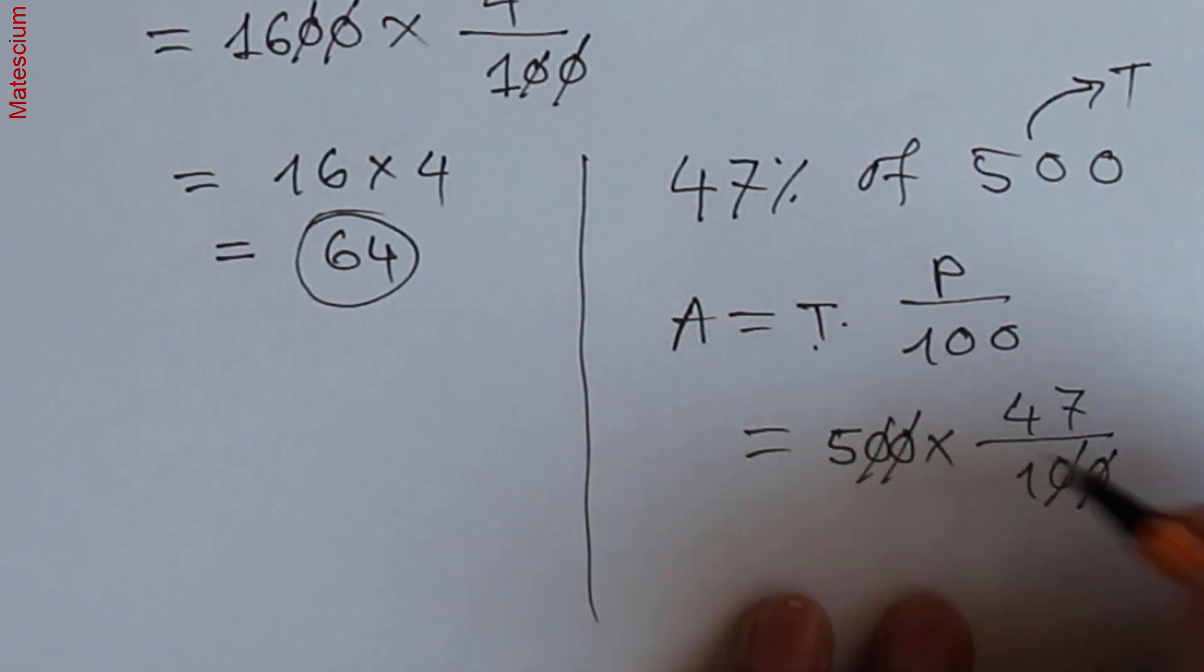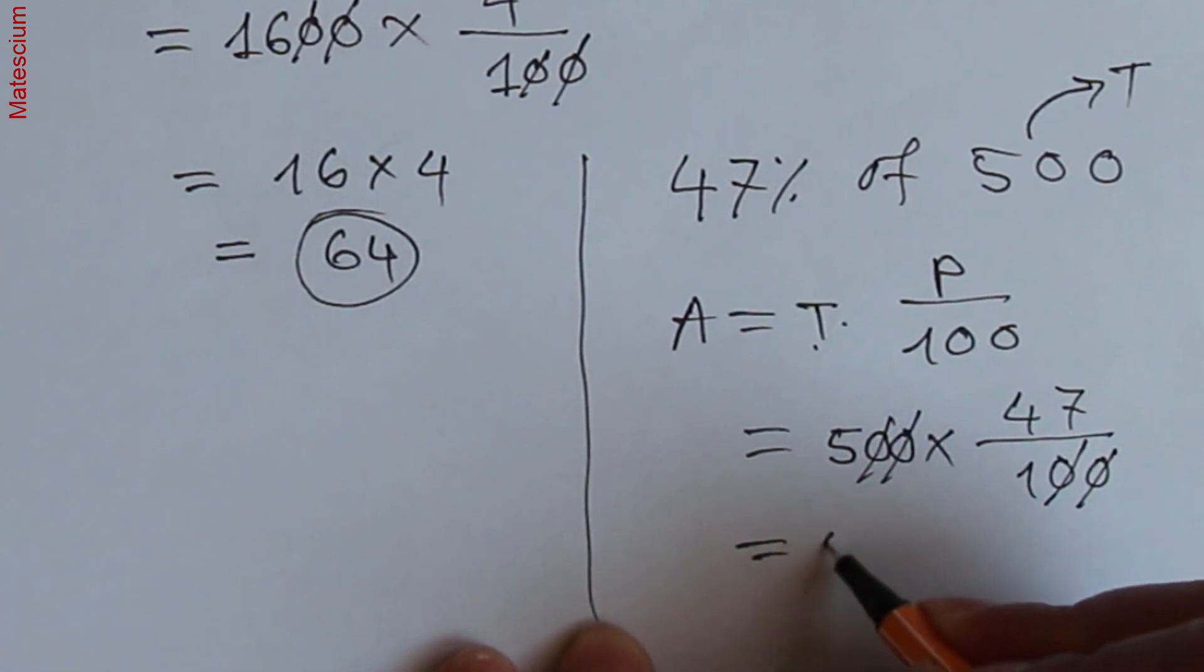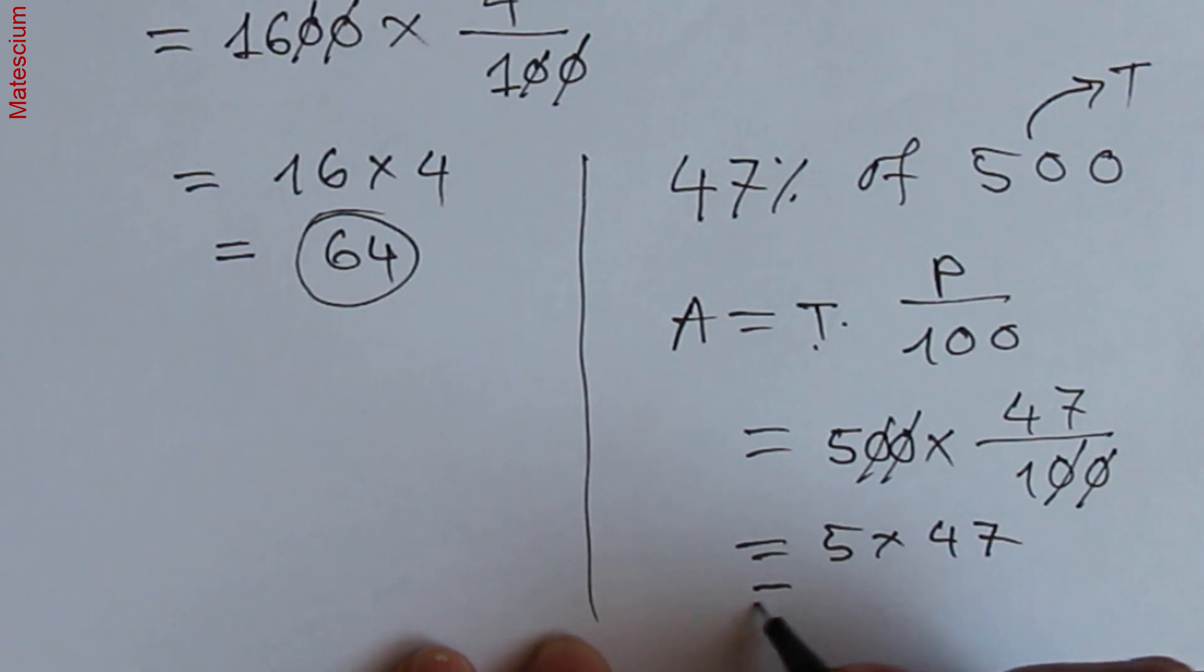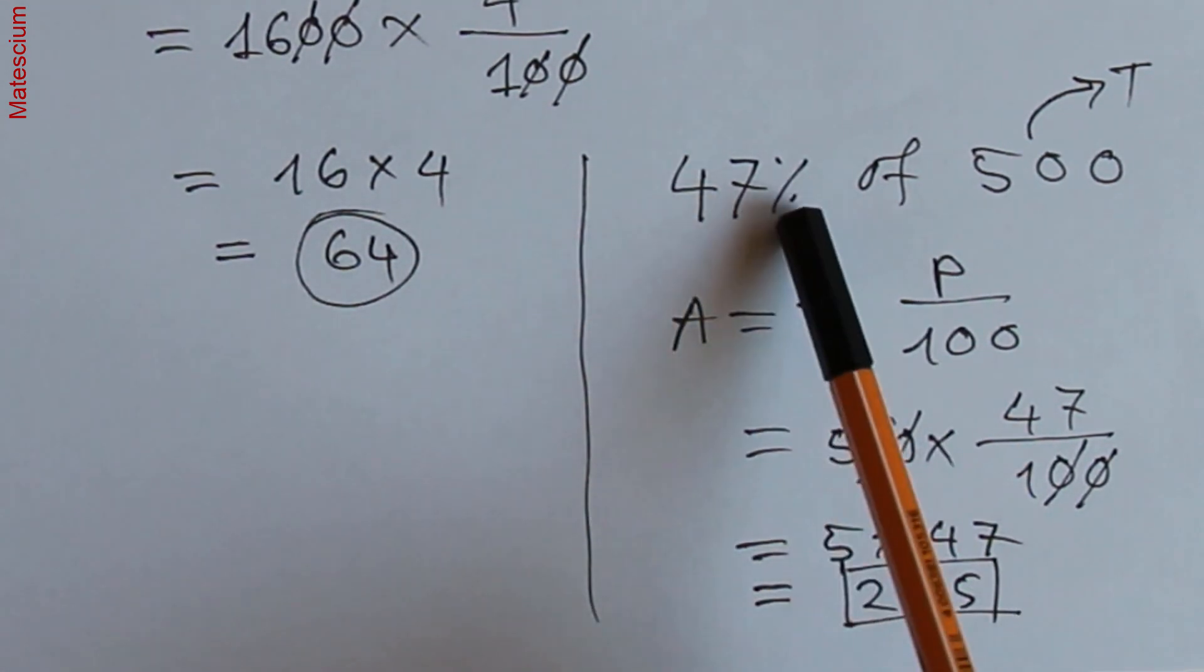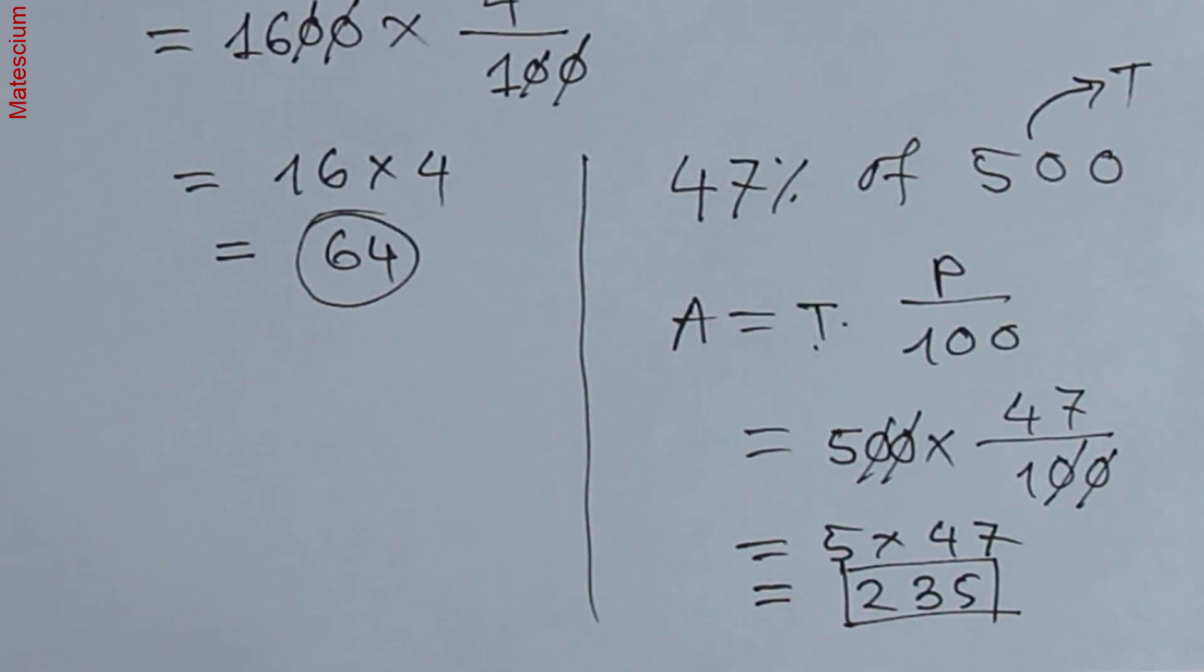This zero, that zero, this zero, that zero they cancelled. Remaining is 5 times 47. And if we calculate this 5 times 47 which is 235. Yes, 235 is the answer of 47 percent of 500. Is it not very simple?